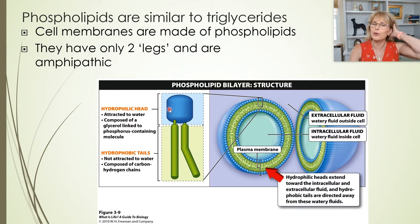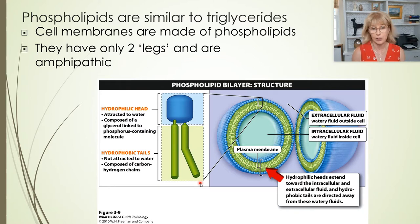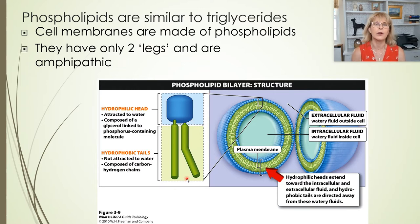They usually refer to these fatty acids as hydrophobic tails, and I don't know why they do that, because first of all there are two of them — what has two tails? — and secondly they clearly look like legs. I usually think of them as legs. These are the lipid part, the hydrophobic part, of this lipid molecule. The fact that these molecules have got one end that loves water and one end that hates water makes these molecules amphipathic.